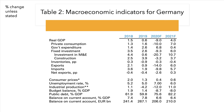GDP is forecast to fall by 9% in 2020. Consumer spending by 10%, investment spending in machinery and equipment by 20%, and exports down 14%. The rate of inflation is forecast to fall close to zero, unemployment rising to only 7%, and the German government running from a budget surplus to a budget deficit of 8.7%.